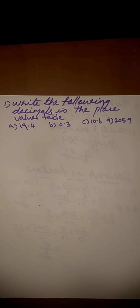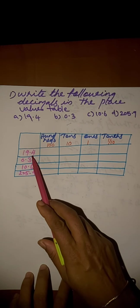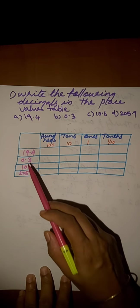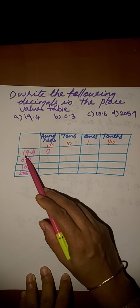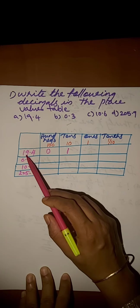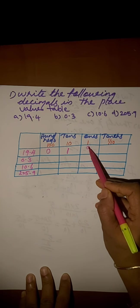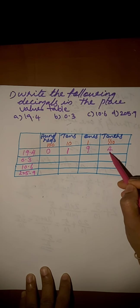First, we draw a place value table. First question, 19.4. Here, hundreds place is 0 and tens place is 1. 9 in the ones place, 4 in the tenths place.